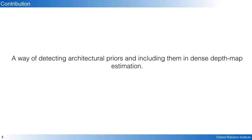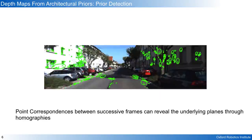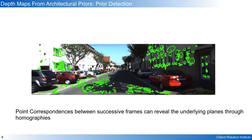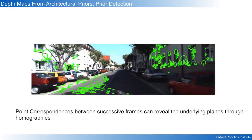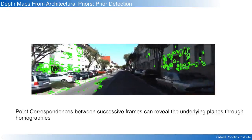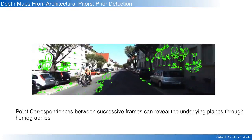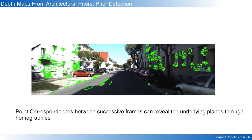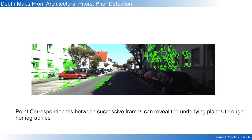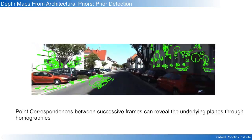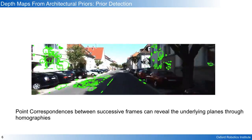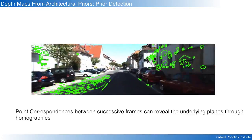In this work we offer a way of detecting architectural priors and including them in the depth map estimation. The first step in our pipeline is the detection of the architectural priors. Correspondences between two camera views can reveal the underlying planes, as points matched between different views that lie on a plane are related via homography.